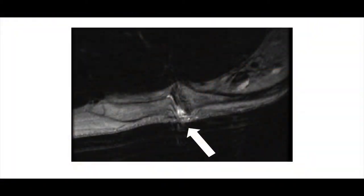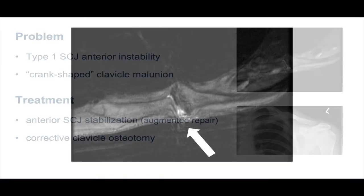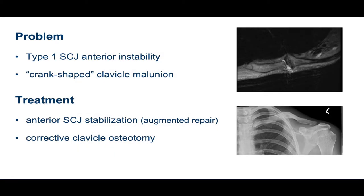An MRI arthrogram demonstrated that he had sustained a complete tear of the anterior capsule. His presenting problem was a type 1 SCJ anterior instability due to tearing of his anterior capsule, but this was due to the abnormal crank shape of his clavicle.